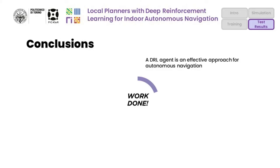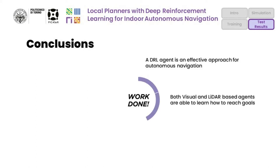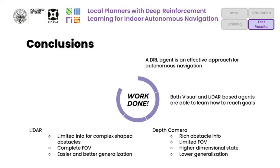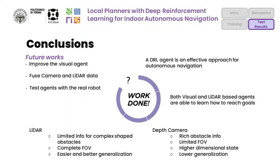In this work we show that a DRL agent is an effective approach for autonomous navigation, and both visual and LiDAR based agents are able to learn how to reach goals. In particular, we compare the two sensor performances, highlighting both the disadvantages and competitive advantages. The LiDAR shows great robustness, while the depth camera needs to be improved for better generalization properties. As future work, we also suggest the fusion between the two sensor data, and testing the agents with real robots.